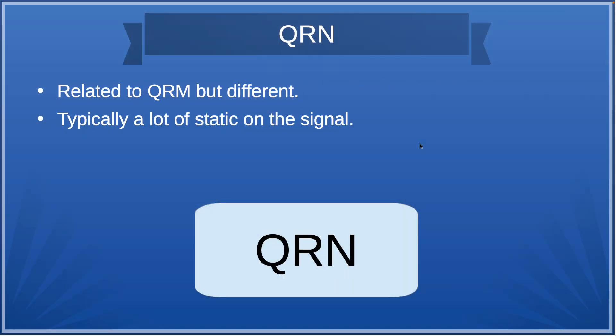QRN is similar to QRM but different. It can certainly be interference, but basically it's just a lot of static on the signal. That could be caused by any number of things — environmental factors, something in your shack, or something outside. It's just static on the signal.